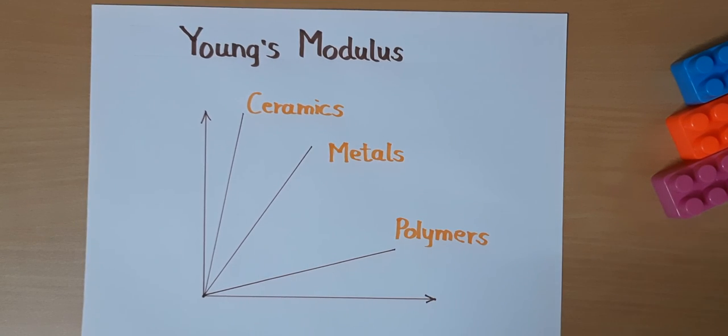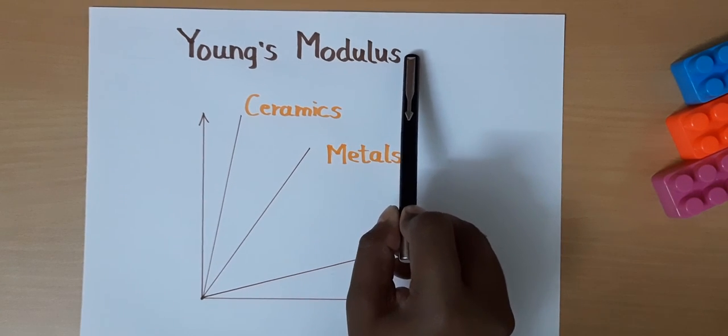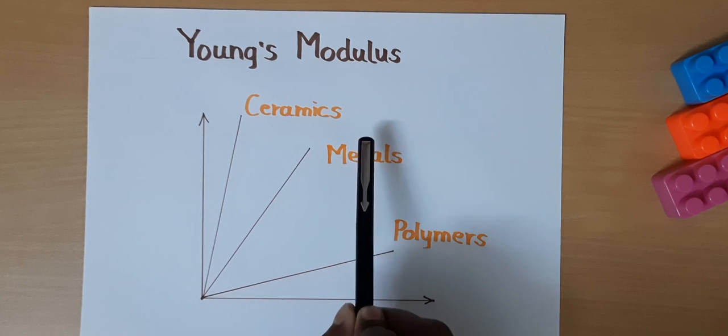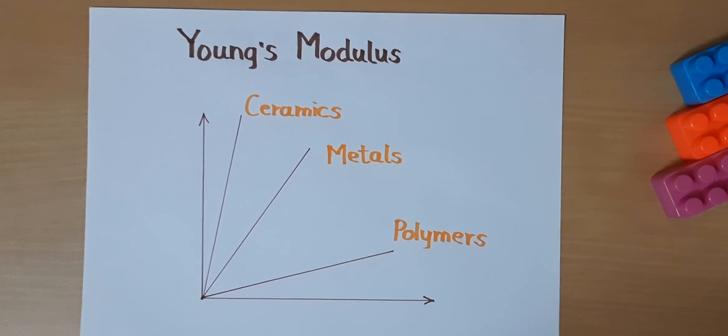This is a very useful material property. But one thing we have to understand in analysis: we use Young's modulus. When we define Young's modulus, it defines the linear line throughout. So when we apply the load, it will show deformation based on this linear line. We need to take care of how to define material properties in analysis.